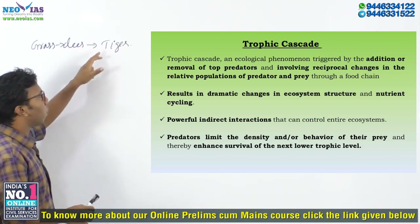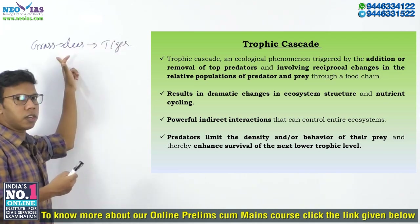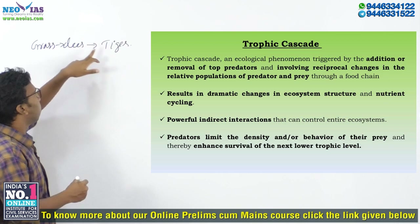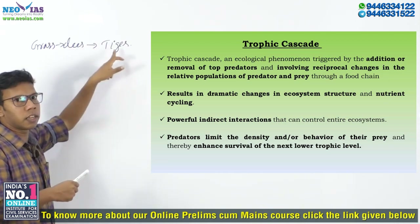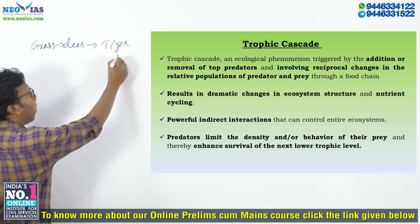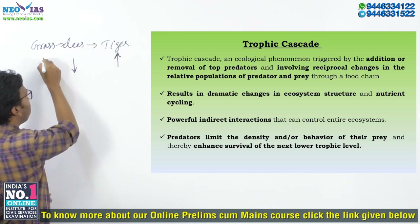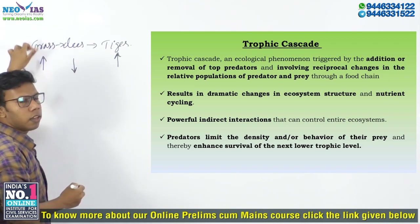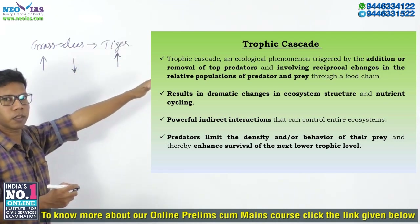When addition or removal of a Tiger happens, that will result in population changes of the lower level Trophic species. For example, when the number of Tigers increases, Tigers will eat Deer — all the Deer will be eaten by the Tigers. Thereby, Grass population will increase. So, when Tiger population increases, Deer population will decrease and relatively Grass population will increase, because when Deer decreases, there are no Deer to eat the grass. This process is called Trophic Cascade.